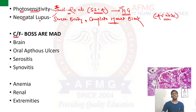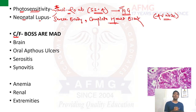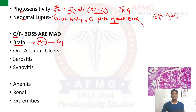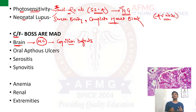Moving to clinical features, these can be remembered with the mnemonic 'BOSS ARE MAD.' B goes for brain — CNS manifestations. The most common CNS manifestation in a patient of SLE is cognition defects, whereas in later stages the patient can present with lupus cerebritis features like cerebral edema, headache, and seizures, due to anti-neuronal antibody.